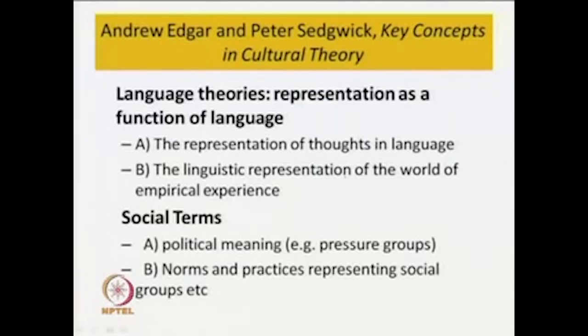Now let us look at a book called Key Concepts in Cultural Theory by Andrew Edgar and Peter Sedgwick. It is like a glossary but more than a glossary — it sometimes gives the historical development of certain terms. Key concepts used in theorizing culture are well written in this book. They talk about representation in two ways.